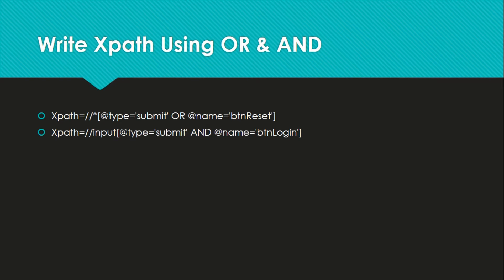Next is writing XPath using OR and AND operations. In an OR expression, two conditions are used — at least one condition needs to be satisfied to locate the element. In the first example, the attribute type is 'submit' OR the name of the button is 'btnReset'. If either of these two conditions is met, it will locate the element correctly.